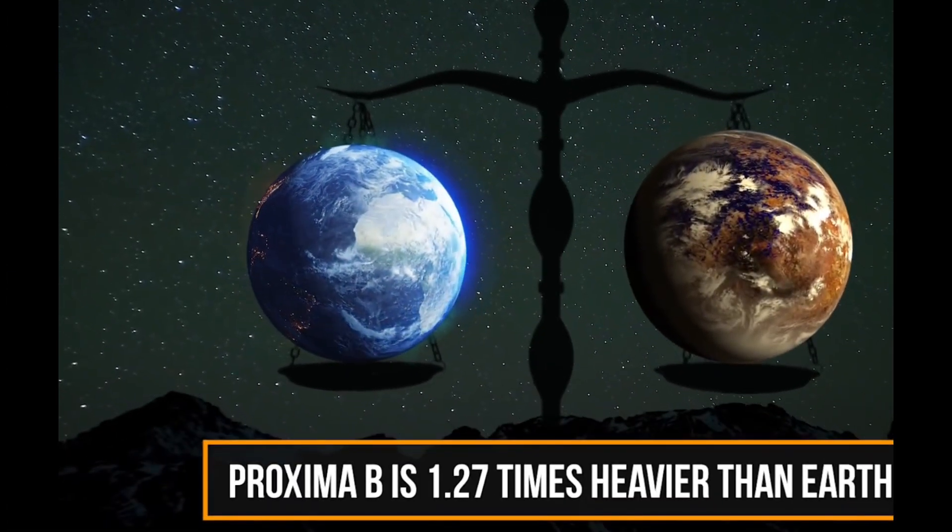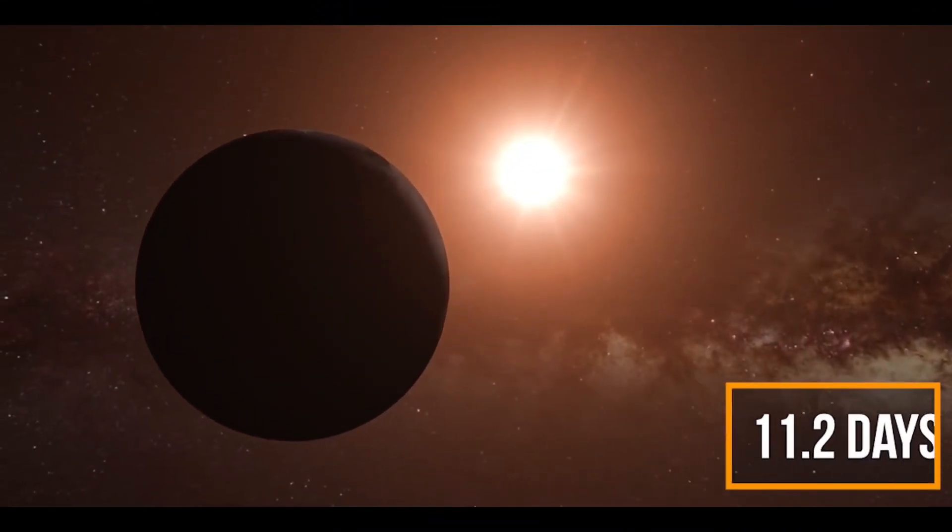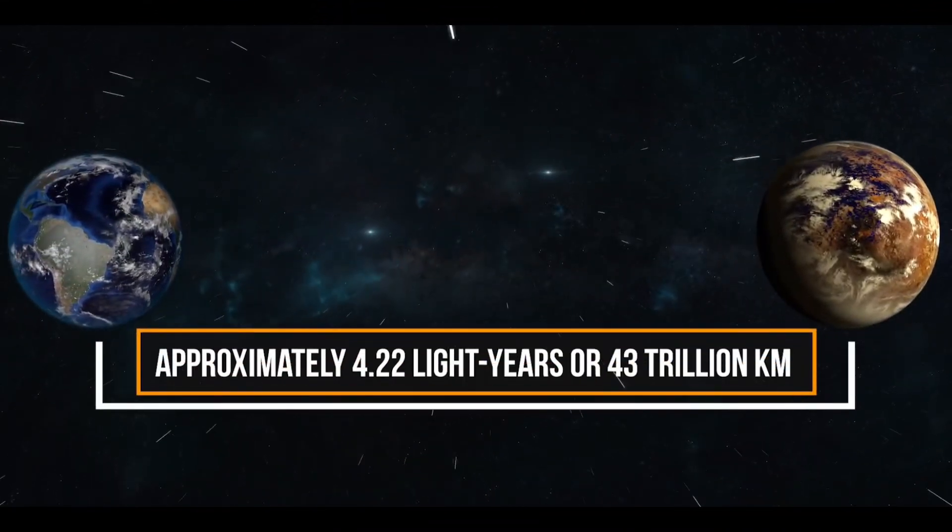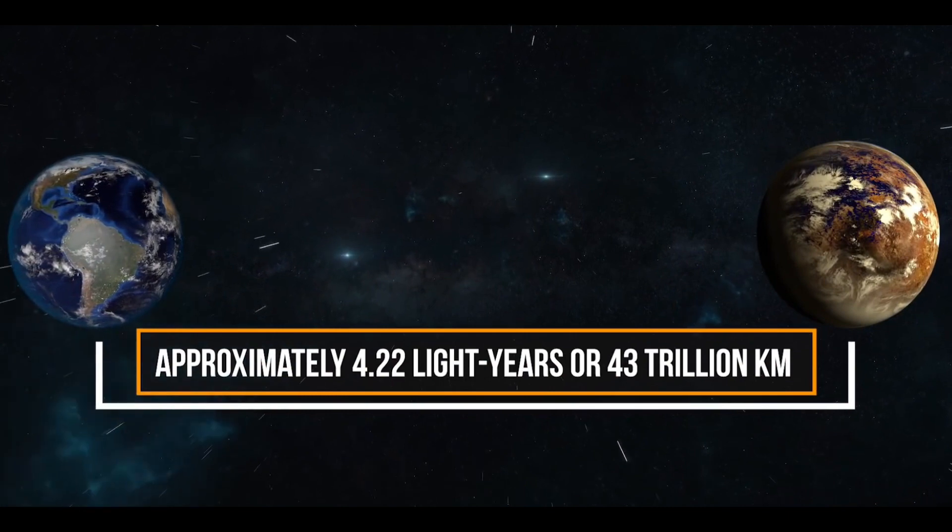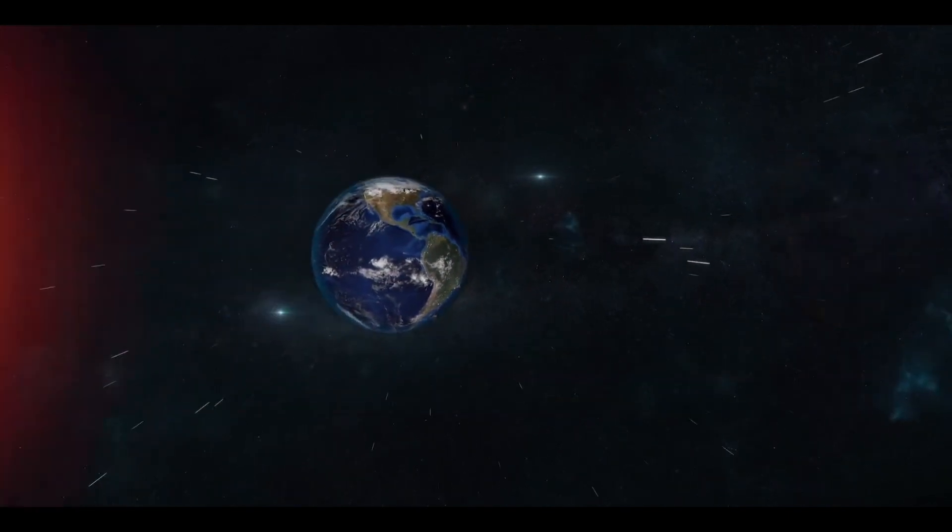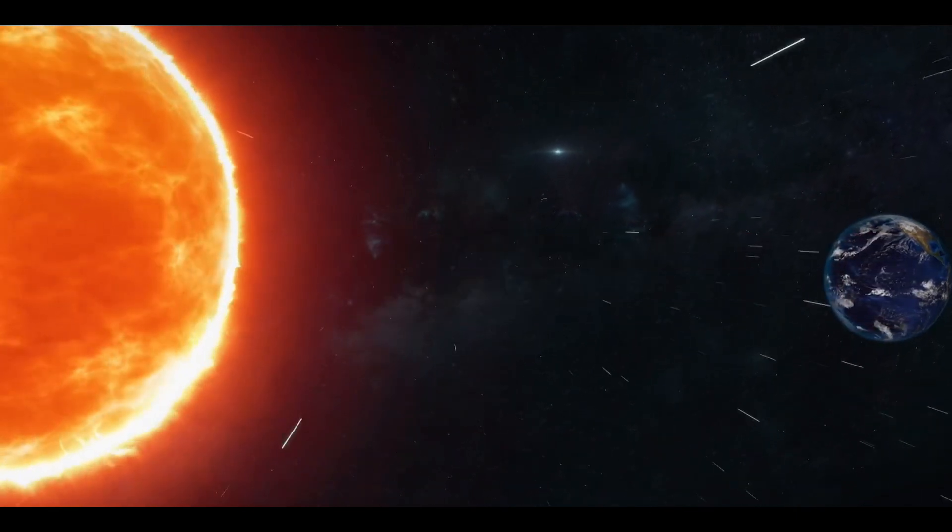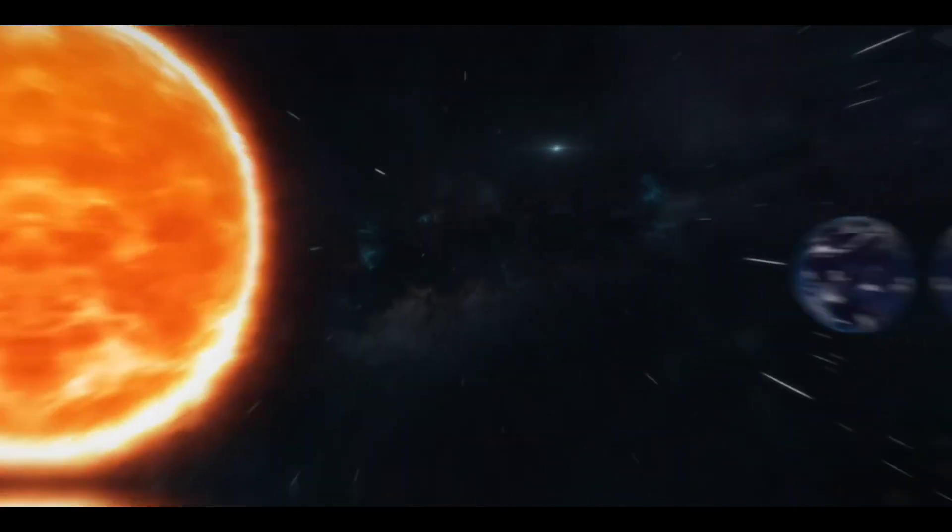Before we tell you about the planet Proxima b, let's take a look at some facts about Proxima Centauri. It is a dim red star with only 12.3% of the sun's mass and one-fourth of its radius with a significantly low temperature of 3042 Kelvin, unlike our sun. Like most stars, Proxima Centauri is relatively unstable and, according to experts, is known to produce large solar flares.